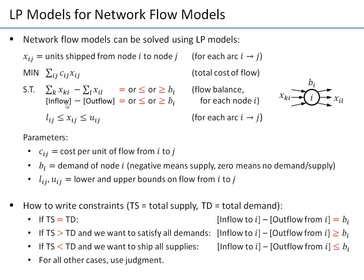The main constraints are all of one type: inflow to node i minus outflow from node i, set equal to, less than or equal to, or greater than or equal to bi. I'll explain the signs later. Essentially, this constraint balances the flow at node i — there are arcs leading into it and arcs taking flow out of it.